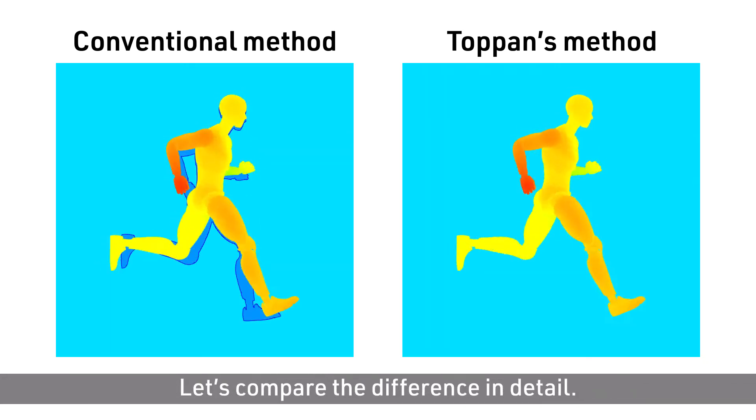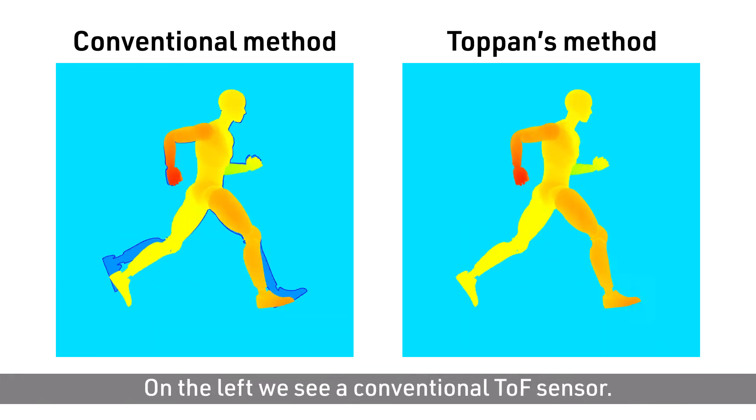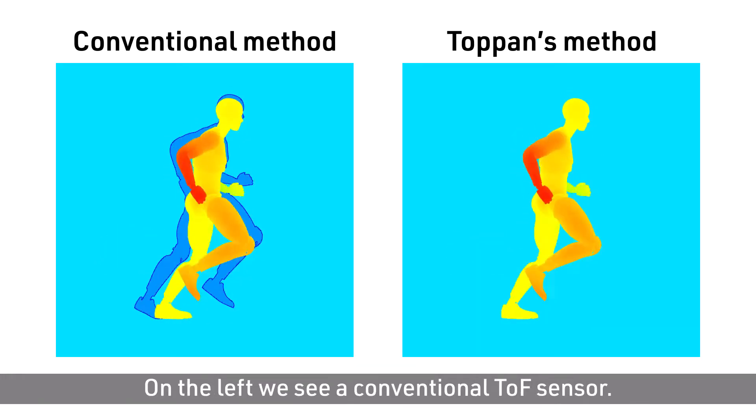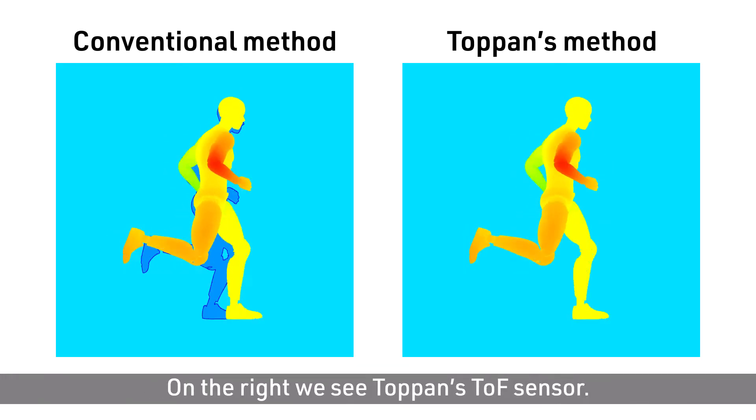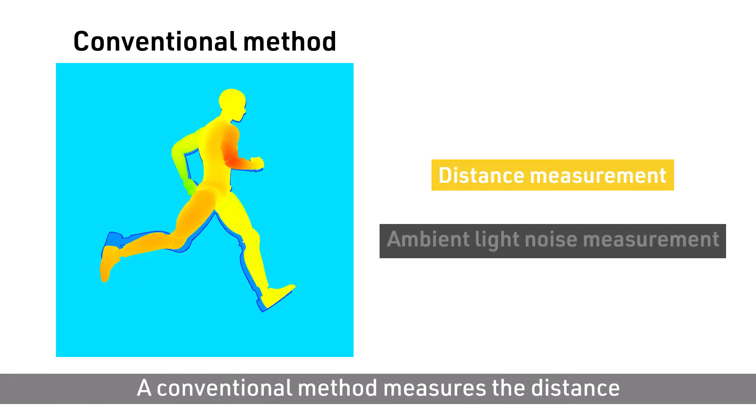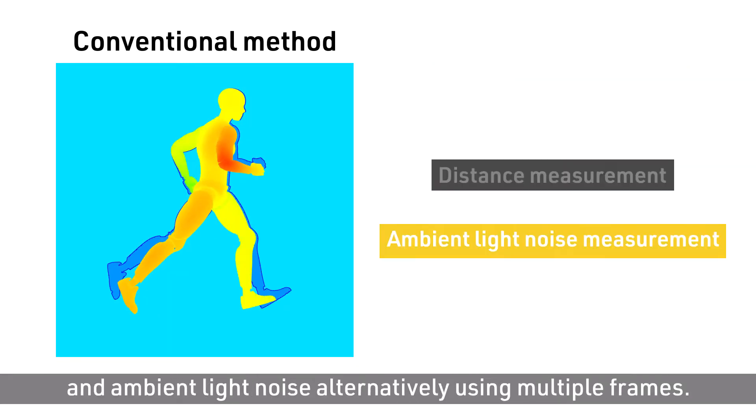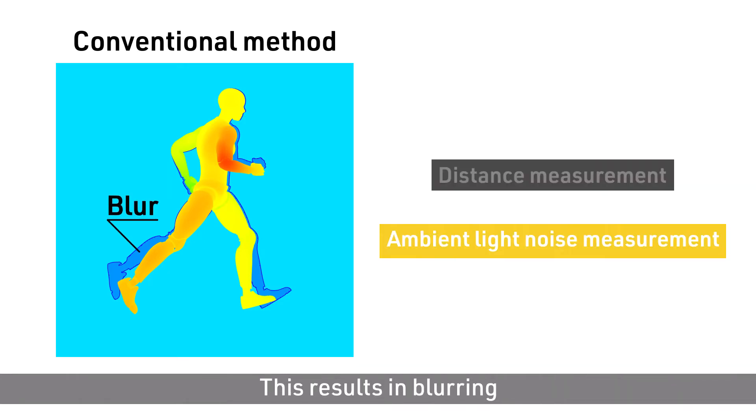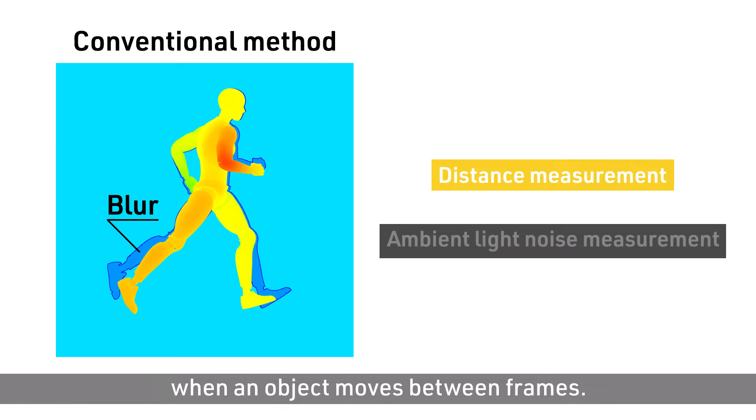Let's compare the difference in detail. On the left, we see a conventional TOF sensor. On the right, we see Toppan's TOF sensor. A conventional method measures the distance and ambient light noise alternatively using multiple frames. This results in blurring when an object moves between frames.